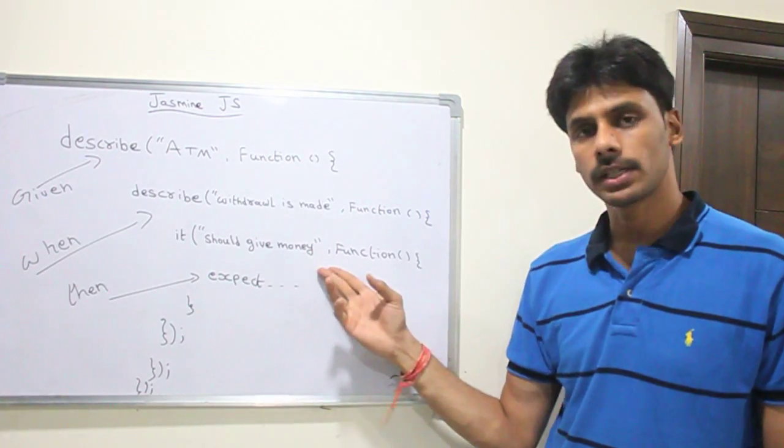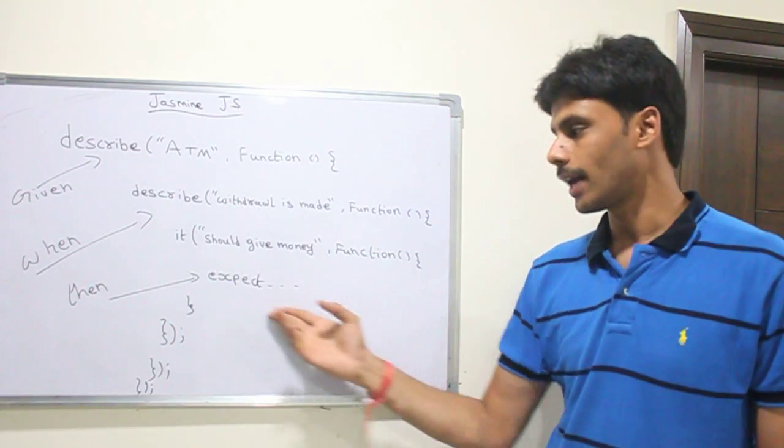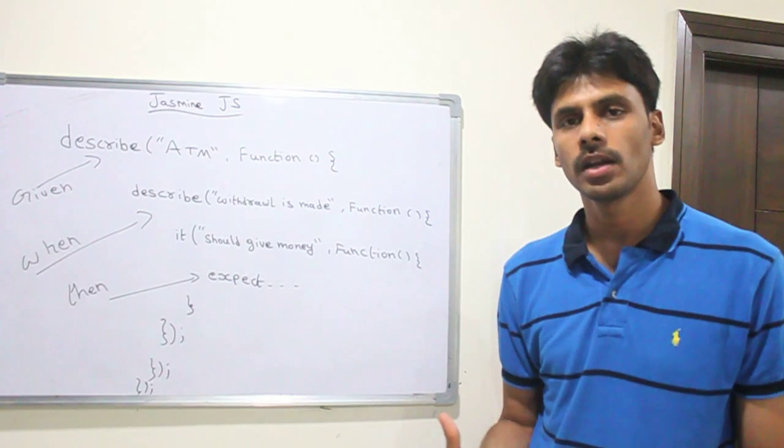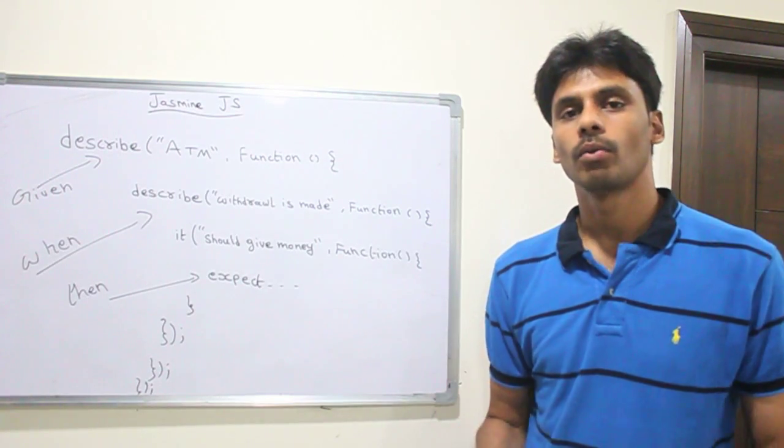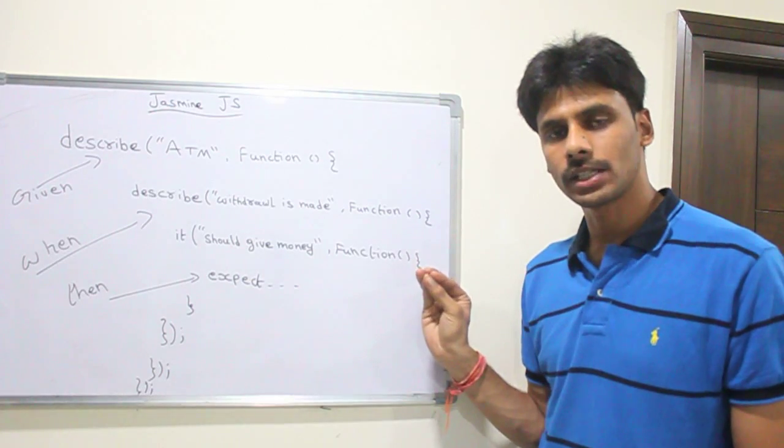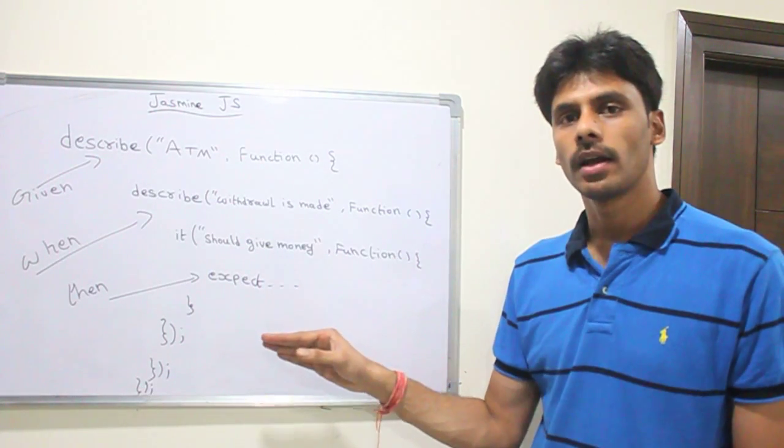It takes two parameters again, string and another function. Within this function, I'm going to use expects and all the other functions given by Jasmine to assert that what is coming back from the class or the JavaScript module under test is what we are expecting.